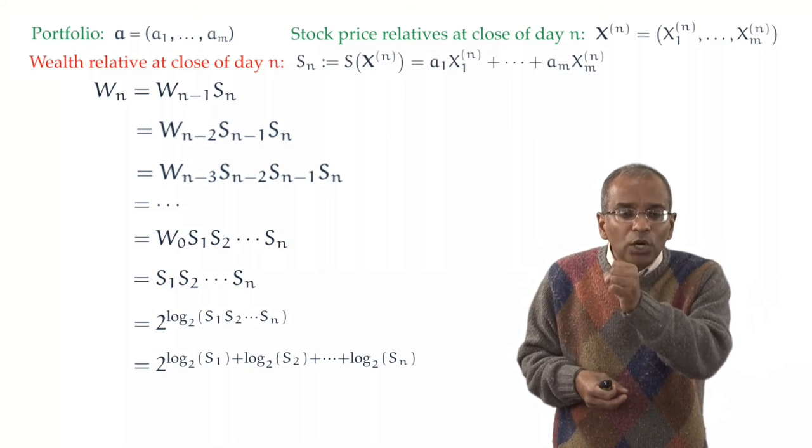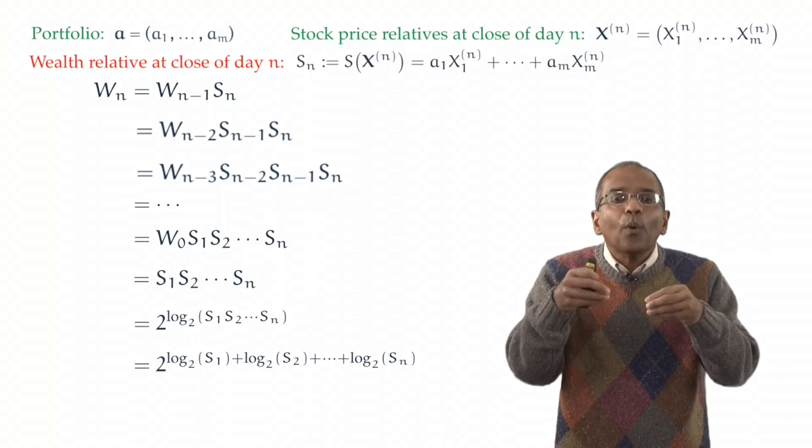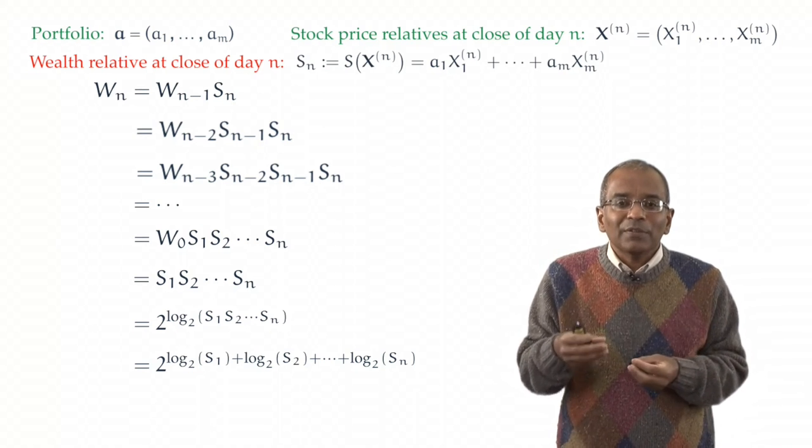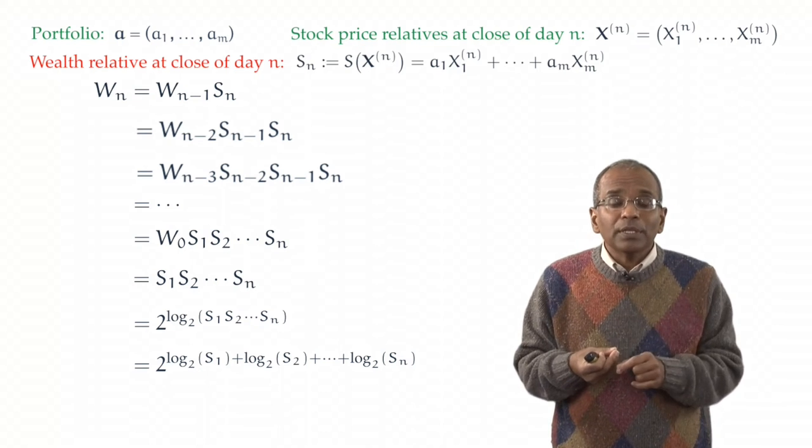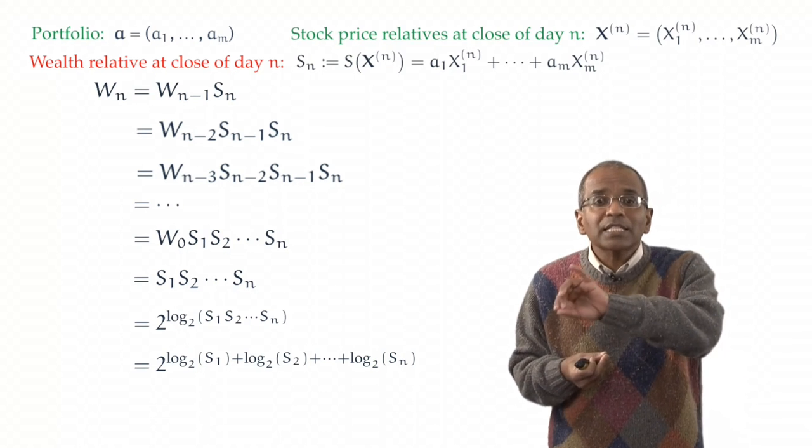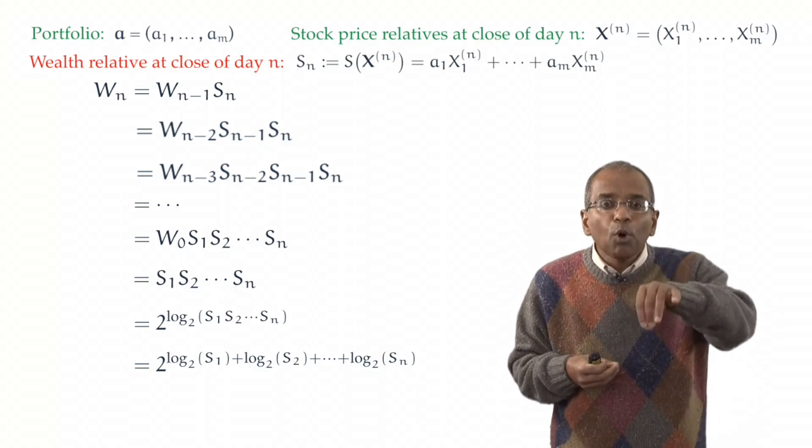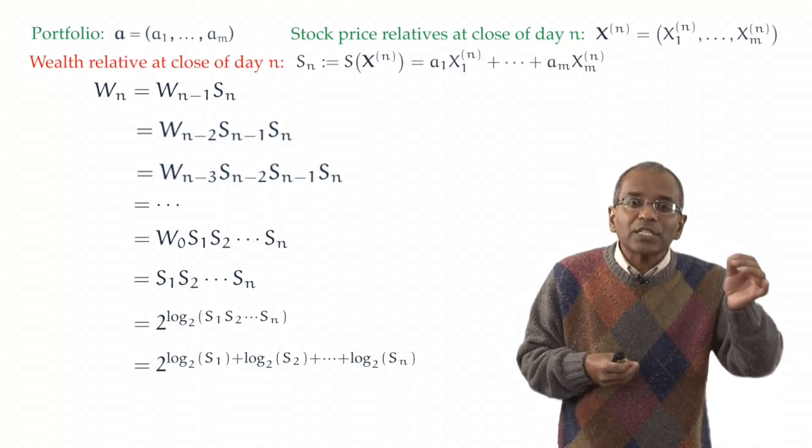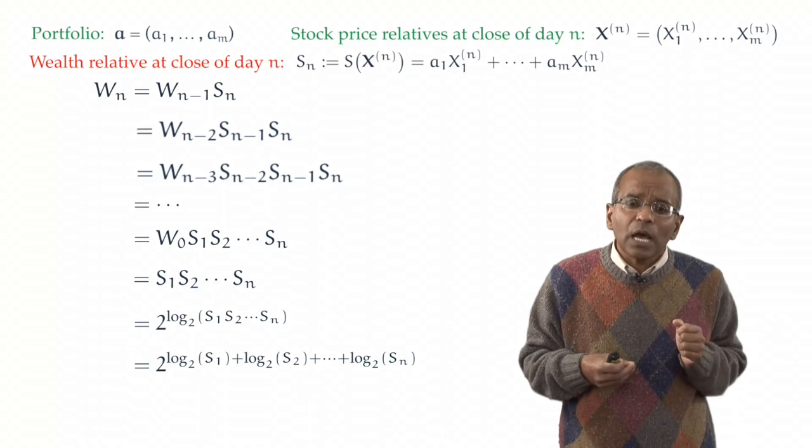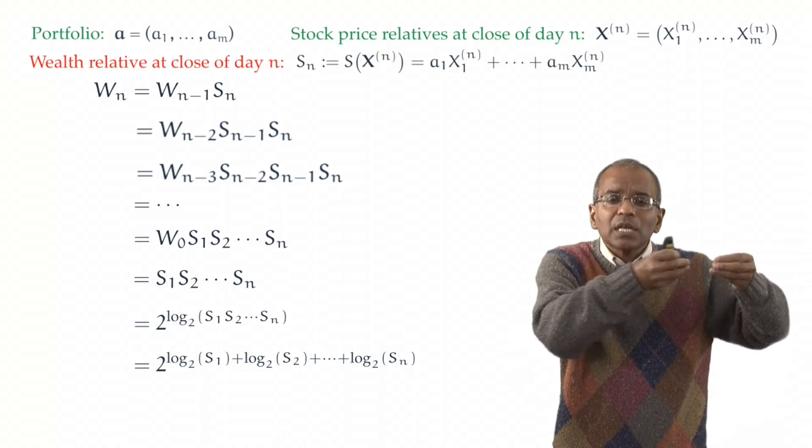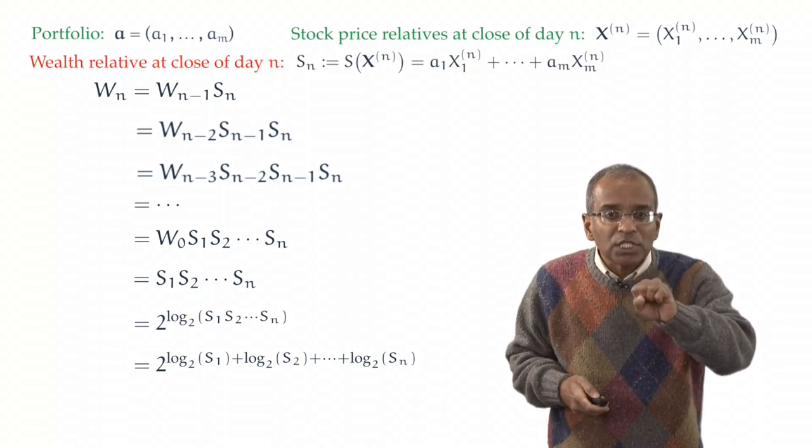Each of the logarithms is a logarithm base 2 of, bear in mind, of these wealth ratios. So we have the logarithm base 2 of S_1, the wealth ratio, the amount wealth has increased proportionately over the course of day 1. The proportional increase of wealth over day 2 is S_2, and we have the logarithm base 2 of S_2, and so on down. So now we've got a sum of logarithms, and this is promising because we know how to deal with sums.